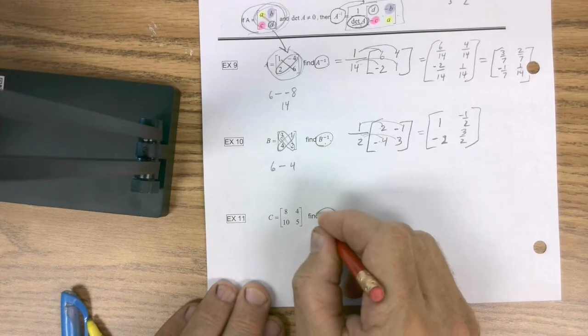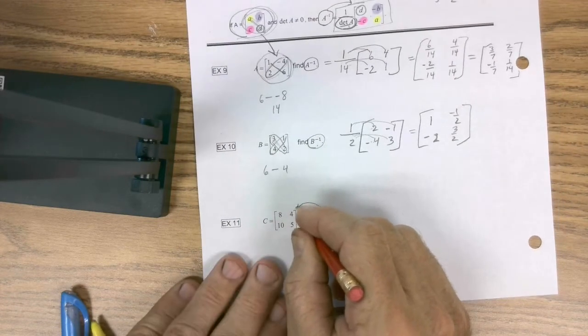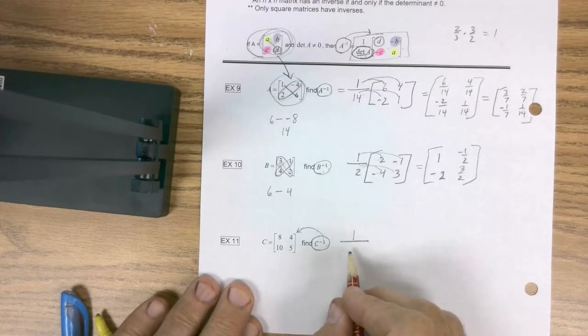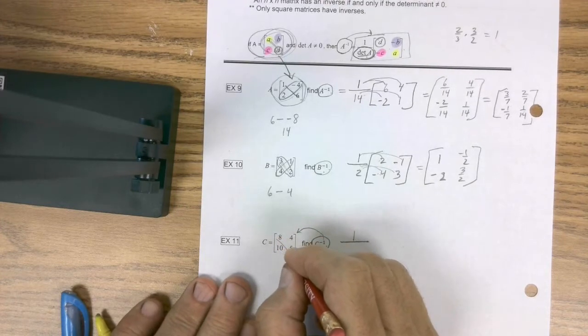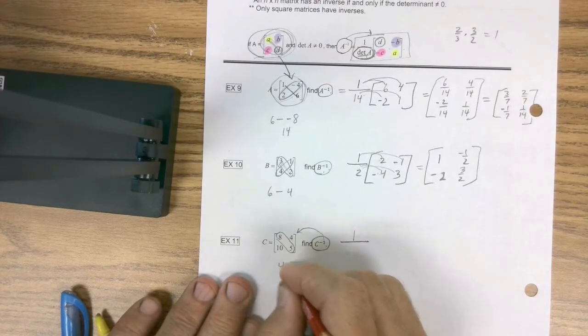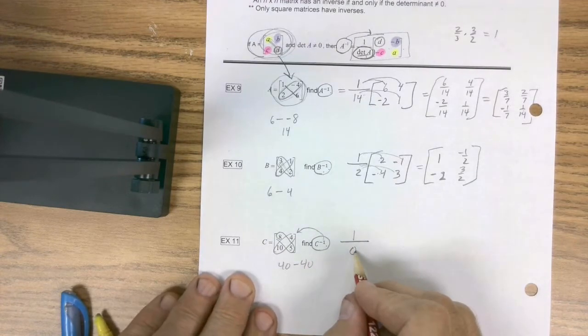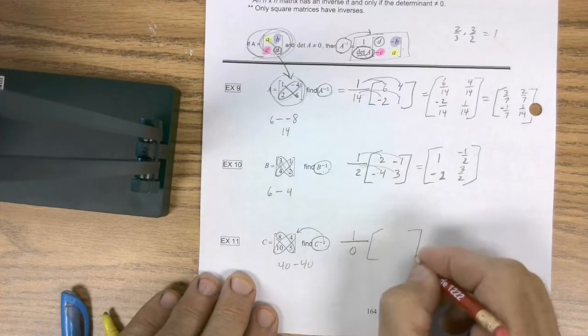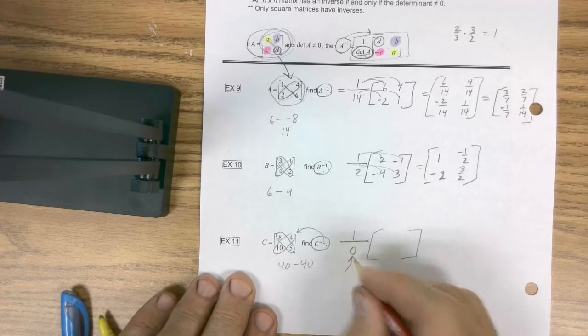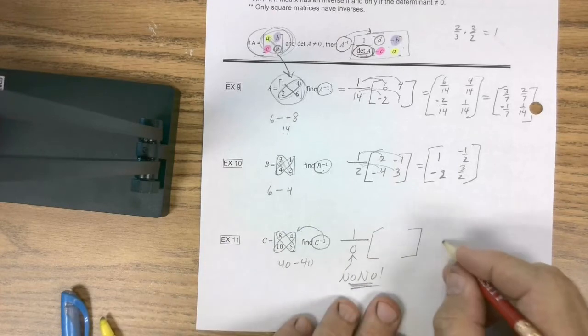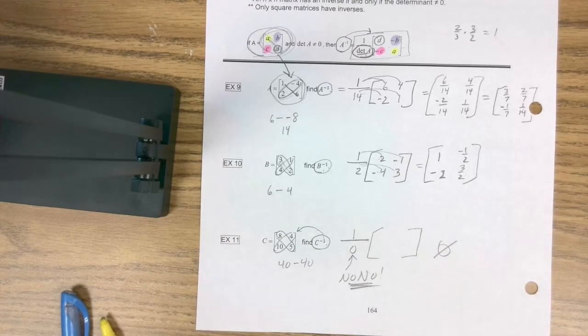Last one. I've got to find the inverse of that. Well, the first thing I have to do is find the determinant of C. So I try it. Eight times five is 40, minus 40. You see a problem? I have a problem to get started. I don't even need to do this anymore because this is mathematically impossible. It's a big old no-no. So this is no solution. Can't do it. It's mathematically impossible. And that's it, you guys. That is it.